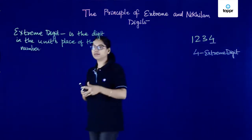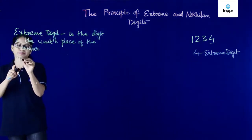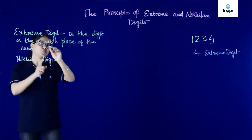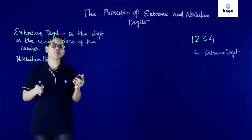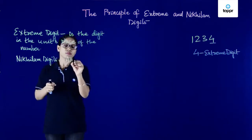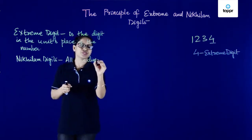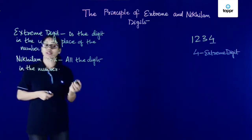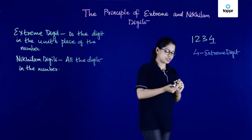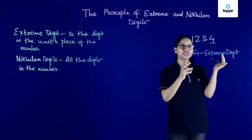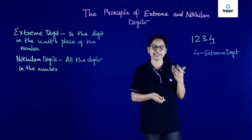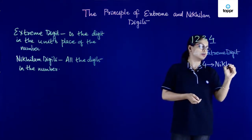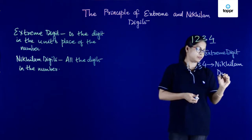Now what is the meaning of nickelam digit? The extreme digit was the digit in the unit's place, and nickelam digit simply means all the digits in the number. So in this particular number, all the digits — 1, 2, 3, and 4 — are called as nickelam digits.